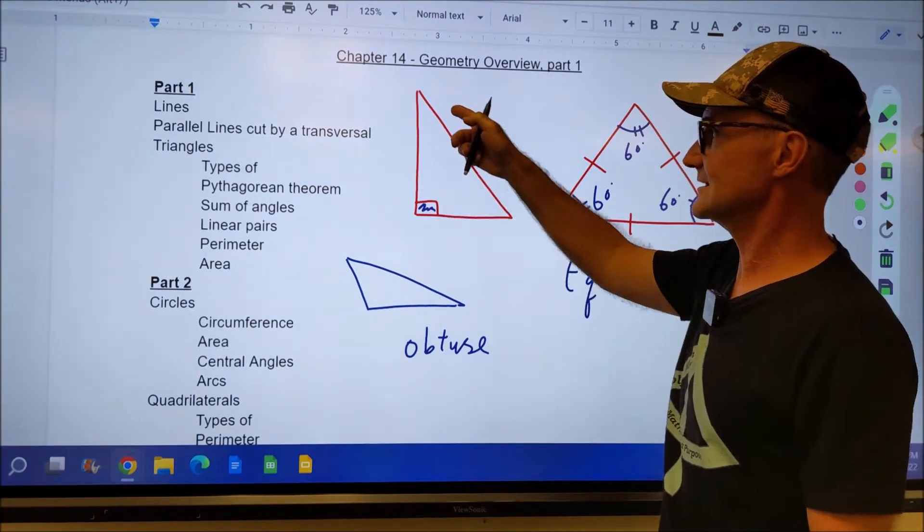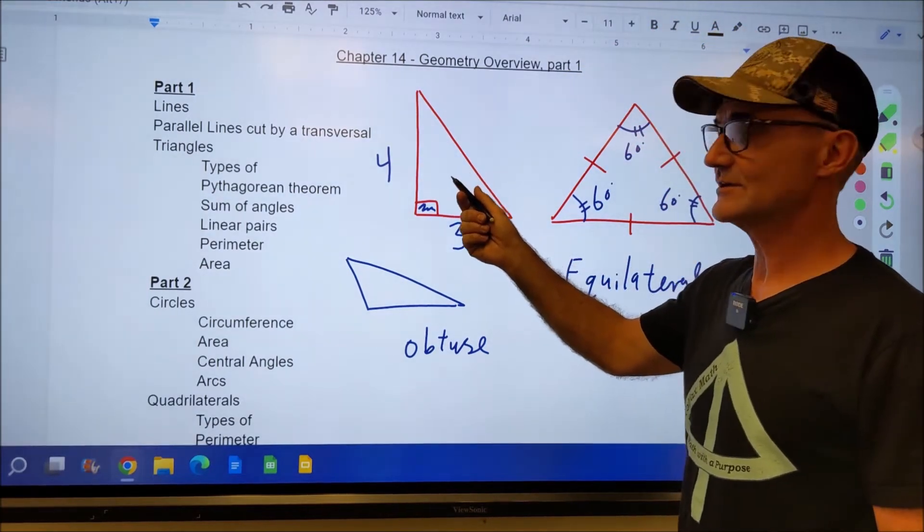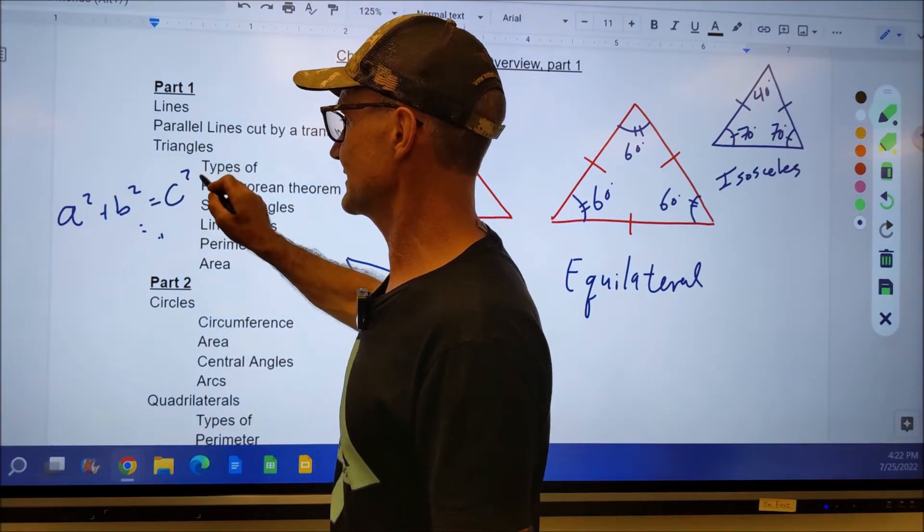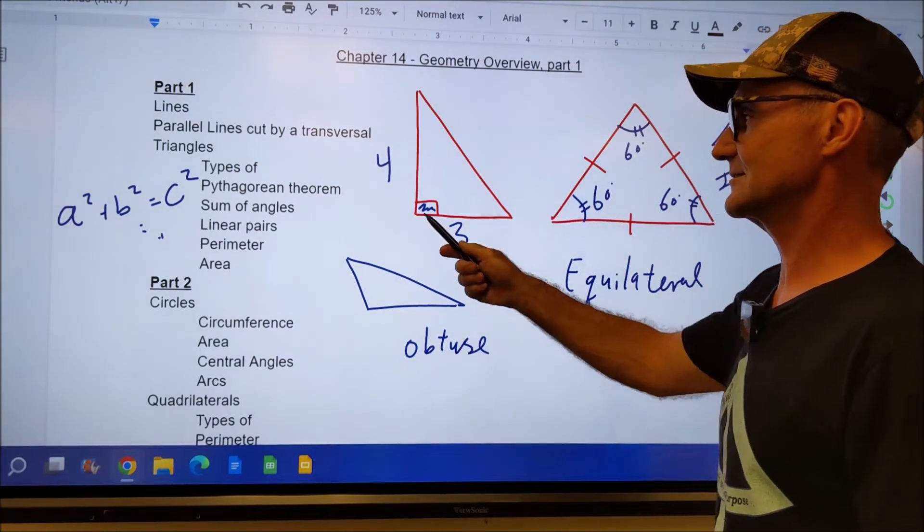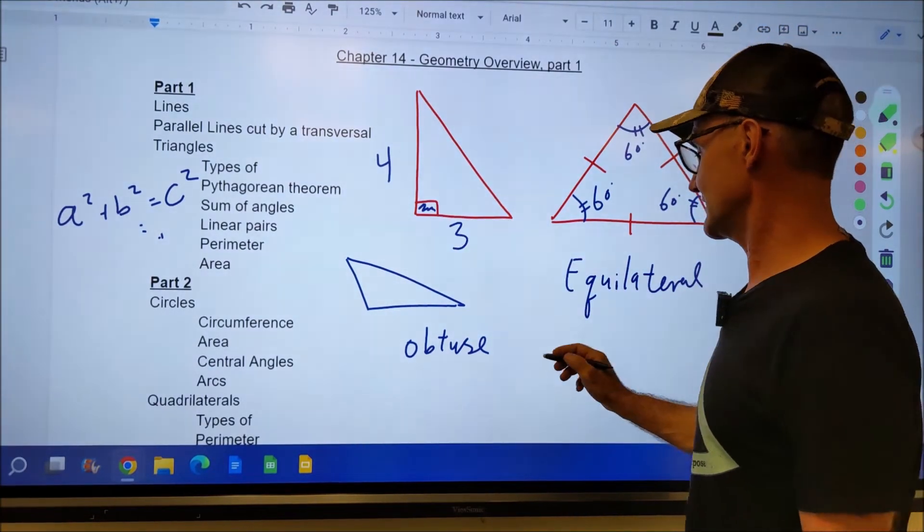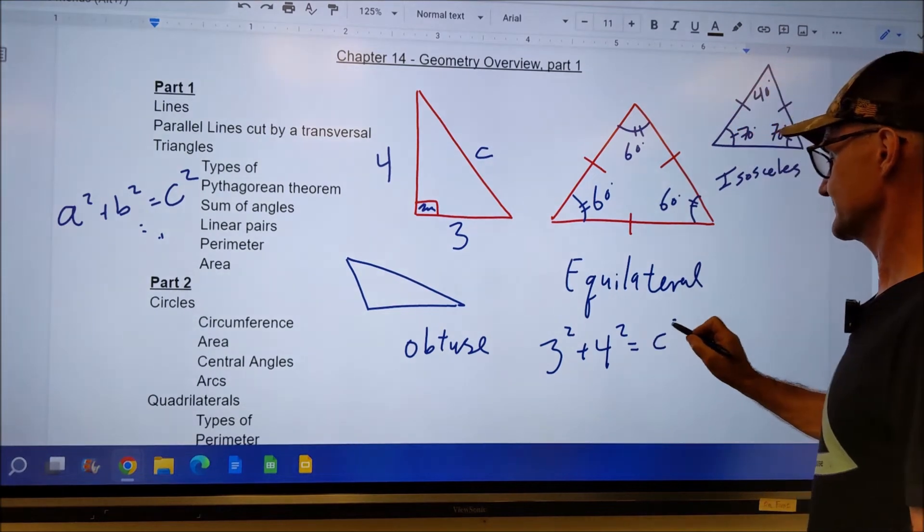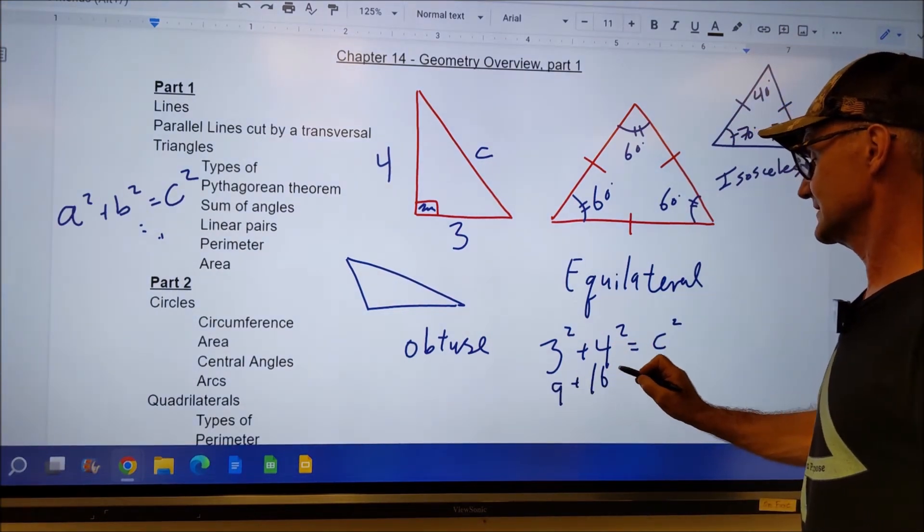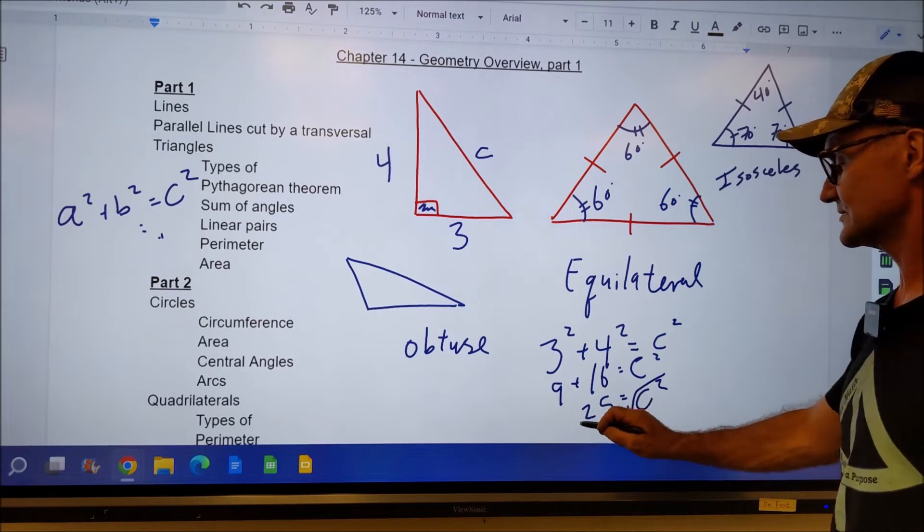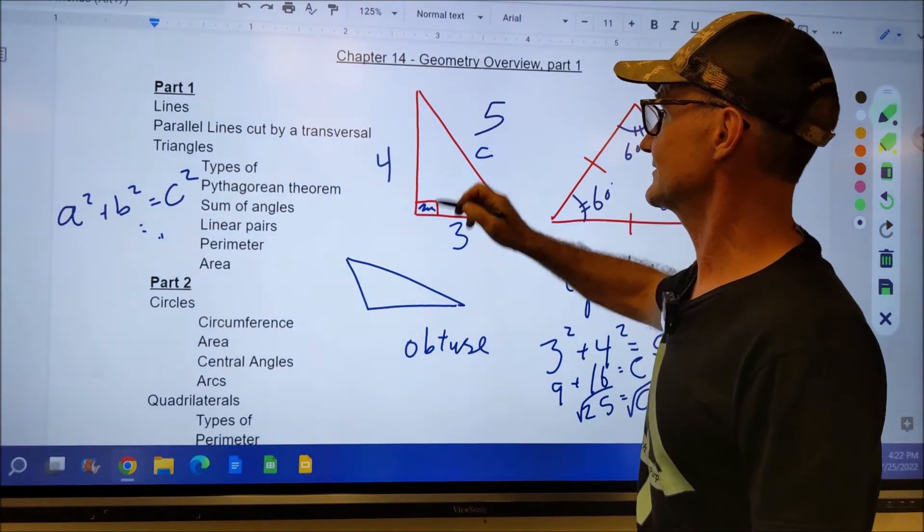This is a leg, this is a leg, this is a hypotenuse. If I have the two legs, let's say this is three and this is four, I could find the hypotenuse. And the Pythagorean theorem is one leg squared plus the other leg squared is equal to the hypotenuse squared. I have one leg is three squared plus the other leg squared equals, I don't know what this is, I'll call it c squared. Three squared is nine. Four squared is 16. It's equal to c squared. Nine and 16 is 25. C squared is equal to 25. Square root of both sides. C can either be five or negative five, but we're talking about the length of a hypotenuse. So we discard the negative and the answer is five.